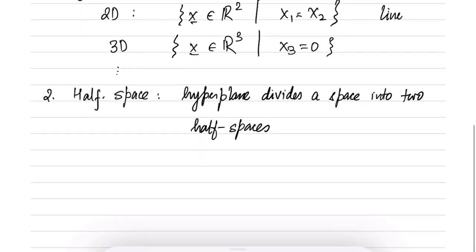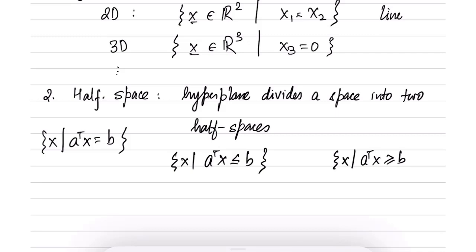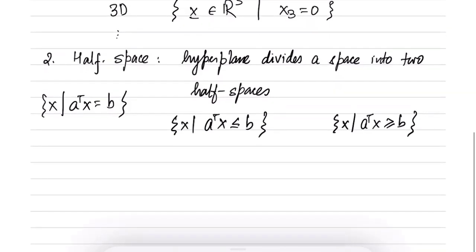So what does that mean? You consider a hyperplane, which is described by this equation, a transpose x equal to b. Then this hyperplane divides the space into two half spaces. So one of them is x such that a transpose x is less than equal to b and the other one is x such that a transpose x is greater than equal to b. So these are the two half spaces.